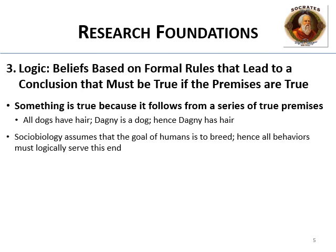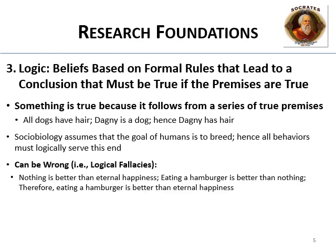Social biologists, for example, assume that the entire goal of everything we do is to breed. Hence, when they interpret human behavior, all behaviors are interpreted logically to serve this end. Logic can be wrong — they even have a term for this: logical fallacies. For instance: nothing is better than eternal happiness; eating a hamburger is better than nothing; therefore, eating a hamburger is better than eternal happiness.